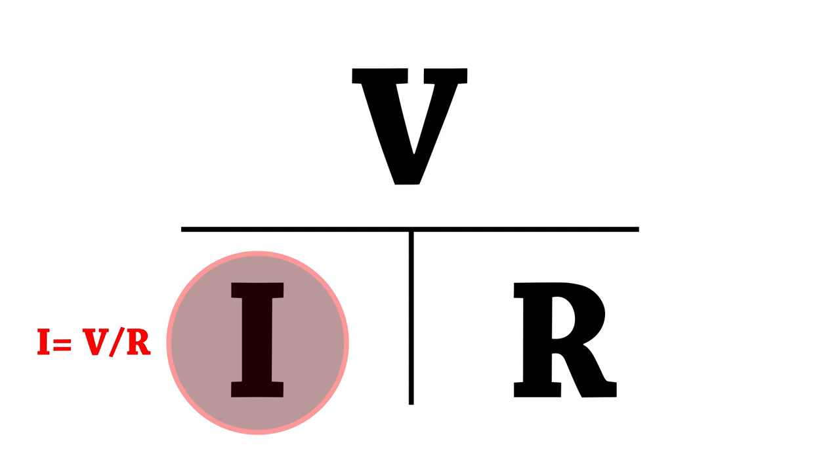So we place our finger over the I, and we look at what's left. We just have the V over the R, which means we need to divide the voltage by the resistance, and that will give us the current.